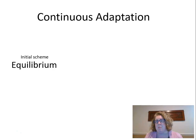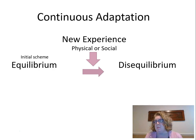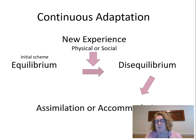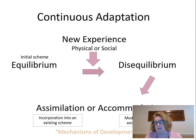We have an initial scheme about the world and we're in a state of equilibrium. Then we have some new experience — physical or social — that leads us to disequilibrium. We're kind of off-kilter; we have something new to figure out what to do with. This disequilibrium is our engine of development. We have two choices: we can either assimilate or accommodate that information. If we assimilate, we incorporate it into our existing scheme; if we accommodate, we modify our scheme so the new experience fits in. Once we've done that, we're in a new state of equilibrium.